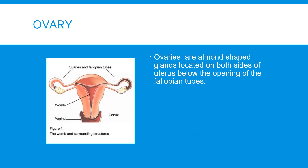Now we move on to the ovaries. Ovaries are the female reproductive organs. They are almond-shaped organs located on both sides of the uterus, with their openings into the fallopian tubes.